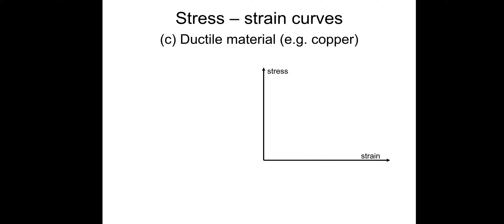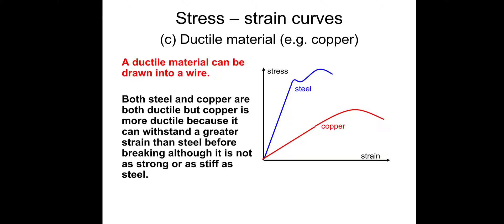So about a ductile material, for example, copper. A ductile material can be drawn into a wire. Obviously, we've got a lot of copper wiring all over. Something like this or like this, depending on the type of material. So both steel and copper are ductile. But copper is even more ductile because it can withstand a greater strain than steel before breaking, although it's not as strong or as stiff as steel. That can be seen from the amount of stress that can be applied before it breaks. So the UTS for copper is down here, and the UTS for steel, the ultimate tensile stress before it breaks, vastly different in terms of stress. So copper is more ductile, more stretchy, so to speak.